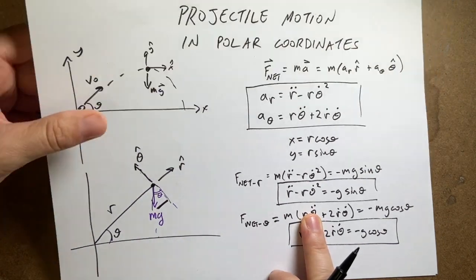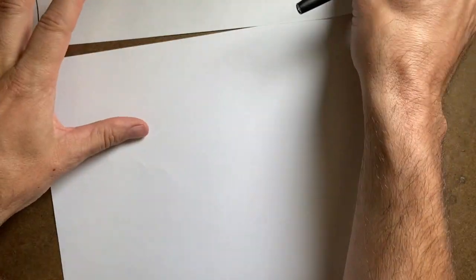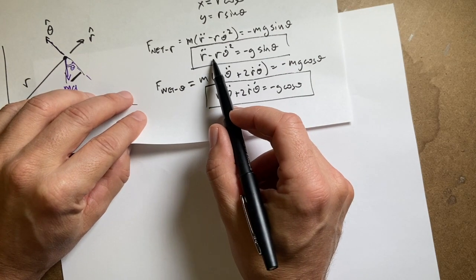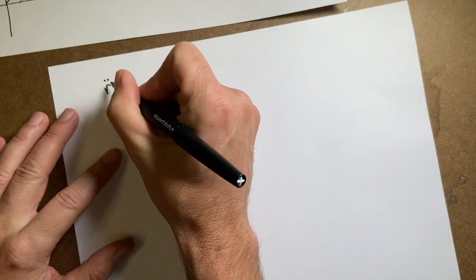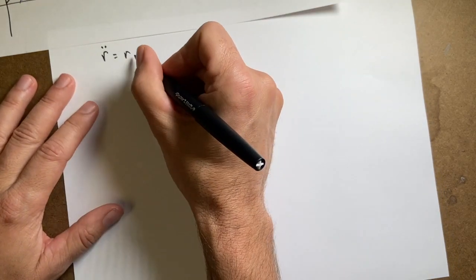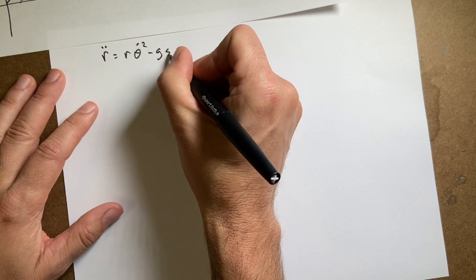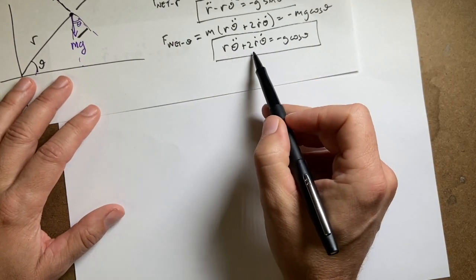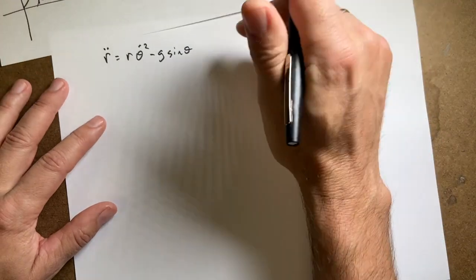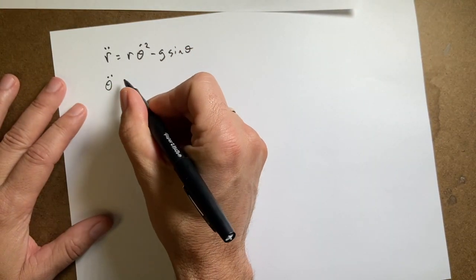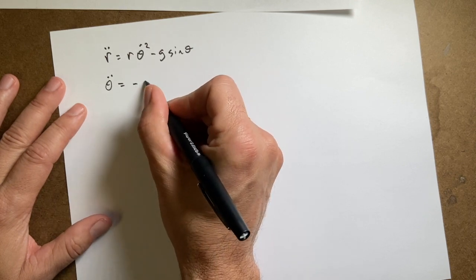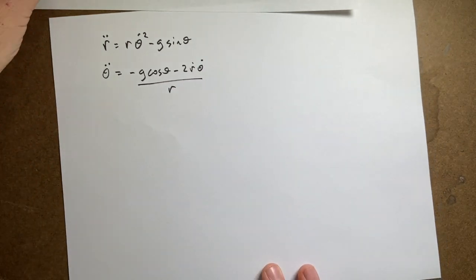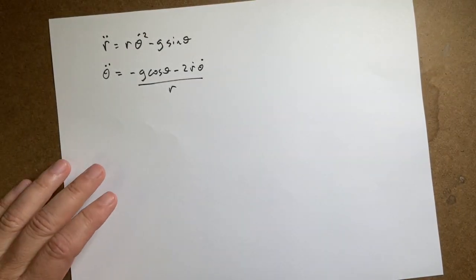Let me rewrite these two equations. I want to take this one and solve for r double dot. So if I solve this for r double dot, I can add this to both sides and I get r double dot equals r theta dot squared minus g sine theta. Now I can do the same thing right here. I can solve this for theta double dot. So I'm going to subtract that from both sides and divide by r. And I get theta double dot equals negative g cosine theta minus 2 r dot theta dot, all of that over r.